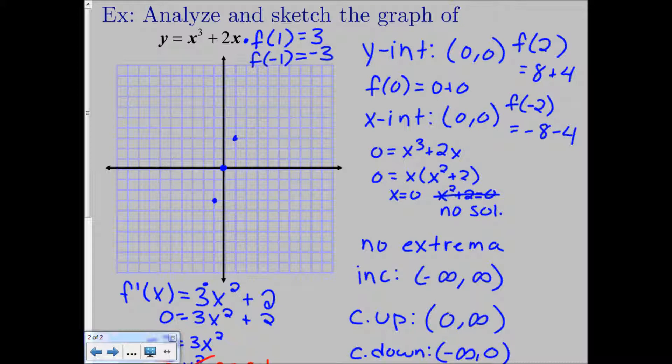So we know that we're increasing everywhere and that we have an inflection point then. So from negative infinity to 0, we're concave down and increasing, which means that we're going something like this. Now it's hard to see because of the way I have the scale of the graph drawn. So maybe let's quick rearrange the scale of the graph.